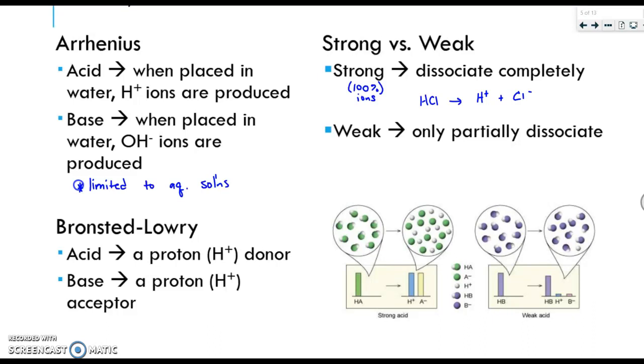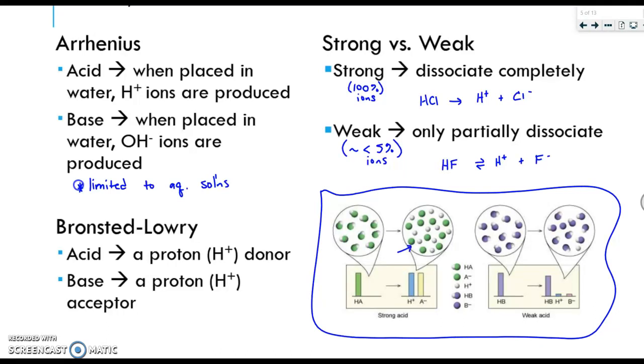For things that are weak instead, they only partially dissociate. Usually, it's a little bit less than 5% that actually turns into ions. And so HF is a good example of this. And you'll notice here, when I write the equation, that I have a double arrow indicating that some turn into ions, but a lot of it stays together. And if you look at the pictures down here, you can see what I'm talking about. So a strong acid completely breaks apart. Here, everything's an ion. Where with the weak acid diagram, only a little bit or a very small amount breaks apart when it dissolves into solution.